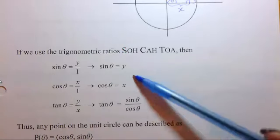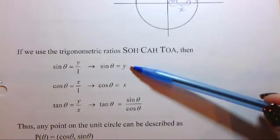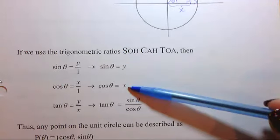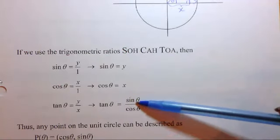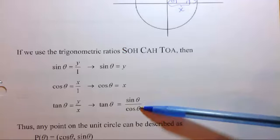Now, if we simplify each one of these, we can just say that sin theta is y on the unit circle. Cos theta is x. And tan theta equals sin theta over cos theta.